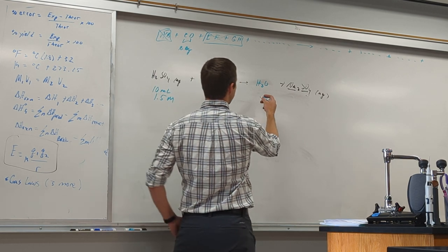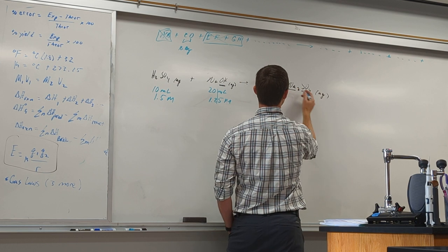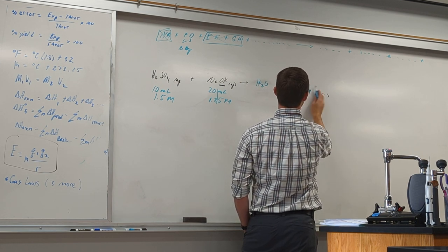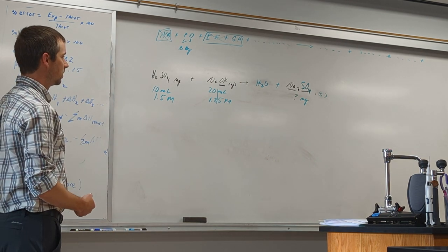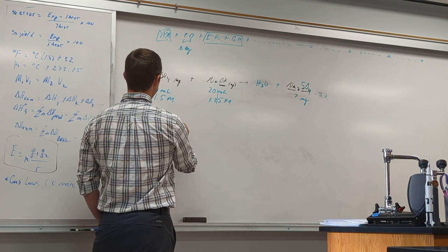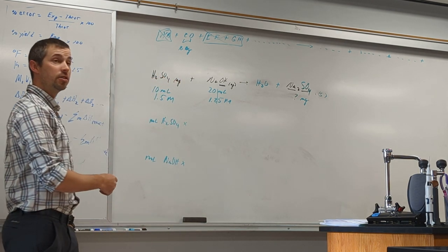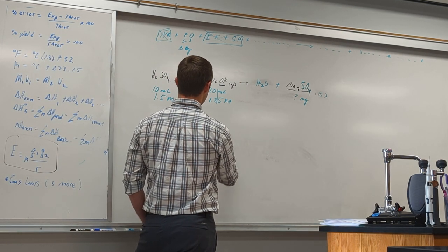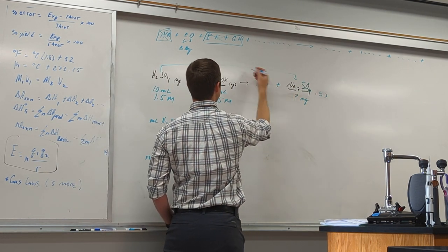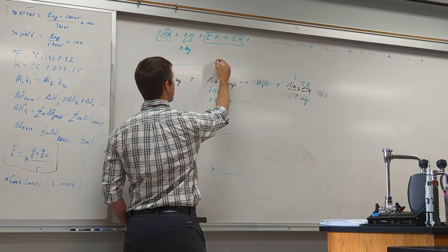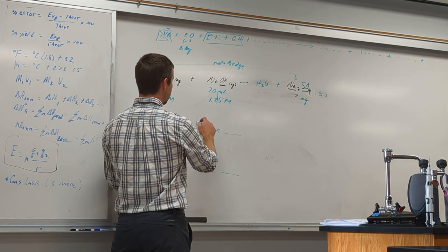It doesn't matter which product we look at — let's choose sodium sulfate. Milliliters of sulfuric acid and milliliters of sodium hydroxide: two calculations because we have two different reactants. Three calculations for three reactants, four for four. We want to get to moles — whenever you see a unit prefix, most likely you're doing a unit conversion. Whenever you compare one thing to something else, you need a mole bridge. So we need to get to moles, get to moles, get to moles.